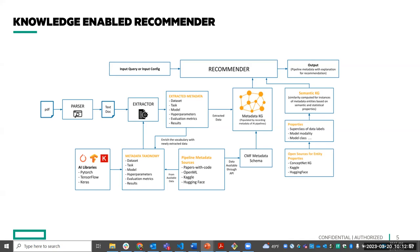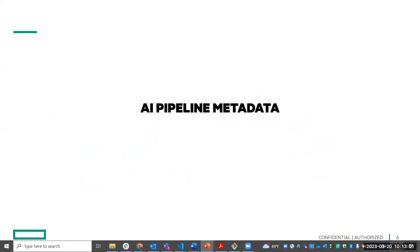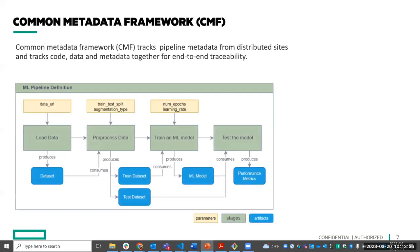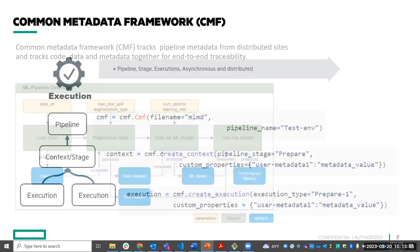To construct the metadata knowledge graph, we need AI pipeline metadata. When we execute an AI pipeline, all the information — the components and parameters of the pipeline — is called the metadata. HP has their own Common Metadata Framework (CMF) which records pipeline metadata. What differentiates CMF from other metadata frameworks is that it is a pipeline-centric approach, where everything from choosing the dataset to deploying is contained within the pipeline.